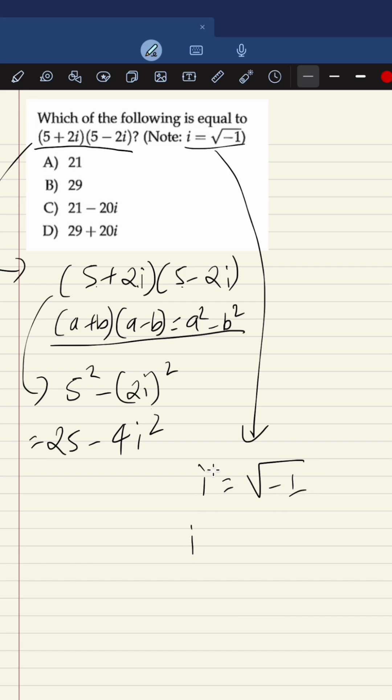(√(-1))². The square will cancel the root, so i² = -1. i squared is -1, which we can use here.